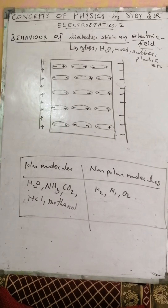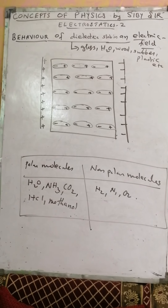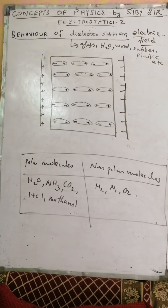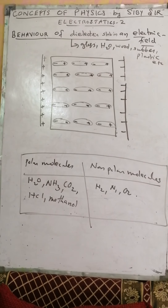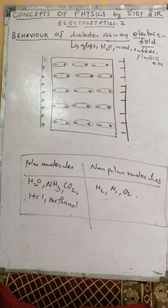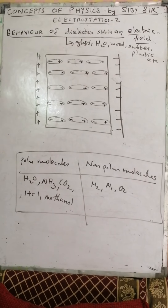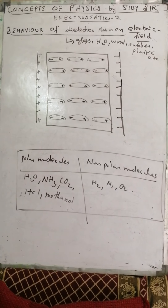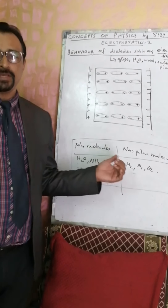Substances which have negligibly small free electrons are called non-conductors or insulators. In an insulator like glass, rubber, etc., each electron is attached or bound to a particular atom and hence these electrons are not free to move in a body of the material. Insulators are also called dielectrics.